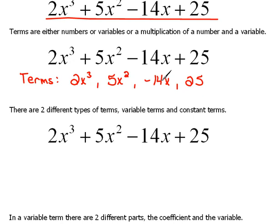Alright, now, there are two different types of terms. Terms can be either variable terms or they can be constant terms. A variable term is pretty much exactly what you think it would be—it's a term that contains a variable. So in our example here, the first variable term would be 2x³, and then 5x², and then -14x.